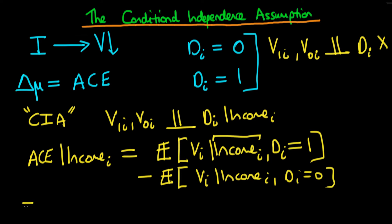Further, we know that we can actually rewrite this top expression as being the expectation of V1I, because that's what's observed in the situation when that state did actually receive infrastructure spending. And similarly we can replace the bottom expression with the expectation of V0I. Then we can use the conditional independence assumption, which says that if we include income in our set of conditioning variables, then the treatment status of that particular area is completely irrelevant.